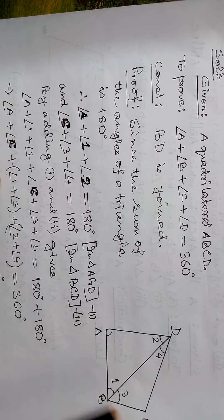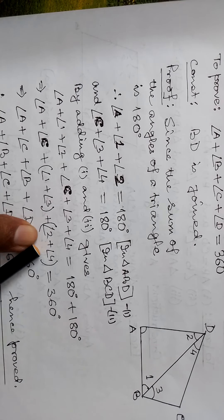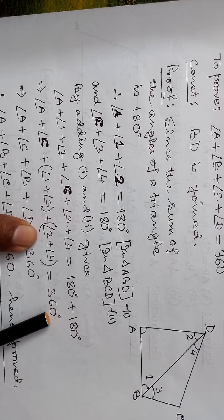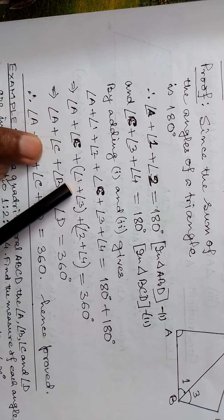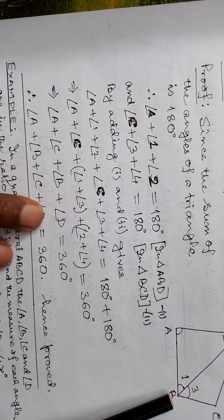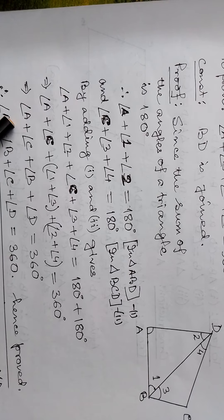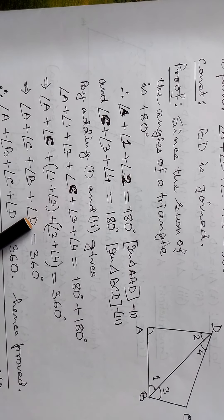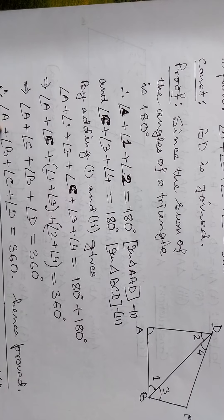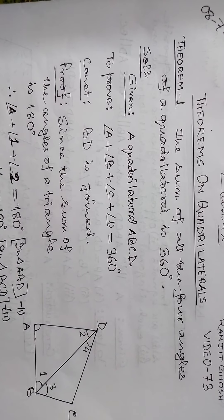We have angle 1 and angle 3 together, and angle 2 and angle 4 together. Angle 1 plus angle 3 equals angle B, and angle 2 plus angle 4 equals angle D. So we have A, C, B, D — that's 360 degrees. Therefore angle A plus angle B plus angle C plus angle D equals 360 degrees. Hence proved. This is a very easy proof.